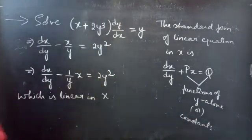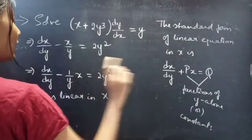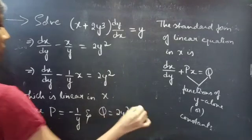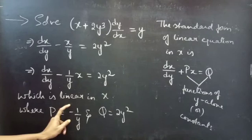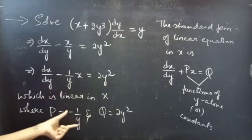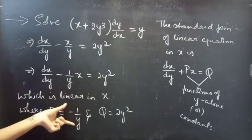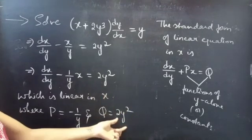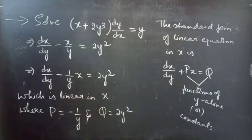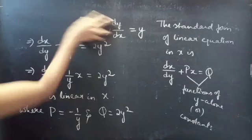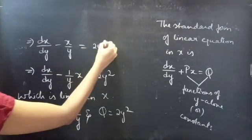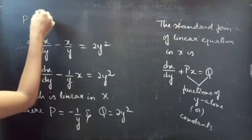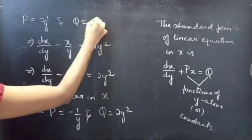In this case, P and Q are functions of y alone. By comparing these two equations, we get P = −1/y and Q = 2y². P = −1/y is a function of y alone — it does not involve any x. And Q = 2y² is also a function of y alone. So P and Q are functions of y alone, and we have reduced the given equation to linear-in-x form.